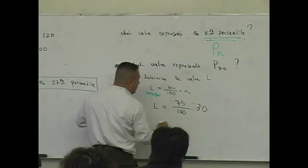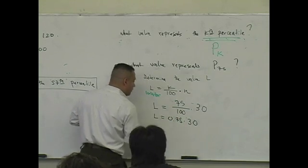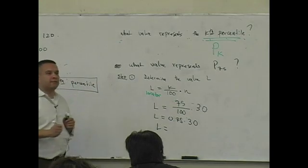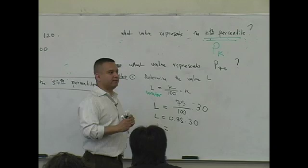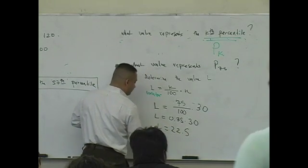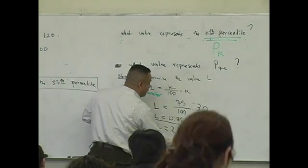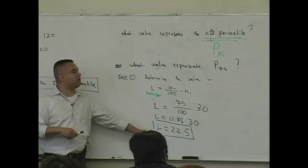So this gives you 0.75 times 30. What is L going to be? What's that? 22.5? Okay, good. 22.5. What you guys have done is the first step here. You've computed the value L, L is a locator.